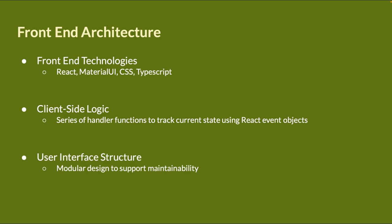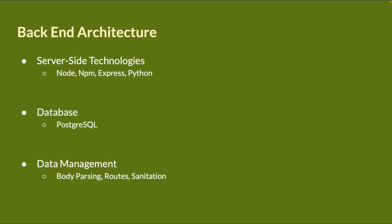Using React's event system, our client-side logic can efficiently update user input and manage the application state in a controlled manner. The user interface utilized a modular design for the various components required, which will hopefully aid future SAFE developers in maintaining and adjusting the system as needed. The back-end architecture is managed by Node, NPM, Express, and Python. We selected Postgres as our database due to PSU's existing infrastructure, but also for its ability to quickly store and retrieve information. Regarding data management, various tools and techniques are used to ensure proper handling, processing, and security of the data. Express middleware has been utilized for body parsing and routing, promoting seamless data extraction and handling of incoming requests. Data sanitation practices have also been prioritized to mitigate potential vulnerabilities. By employing these data management methods, we enhance the overall reliability, stability, and security of our architecture.